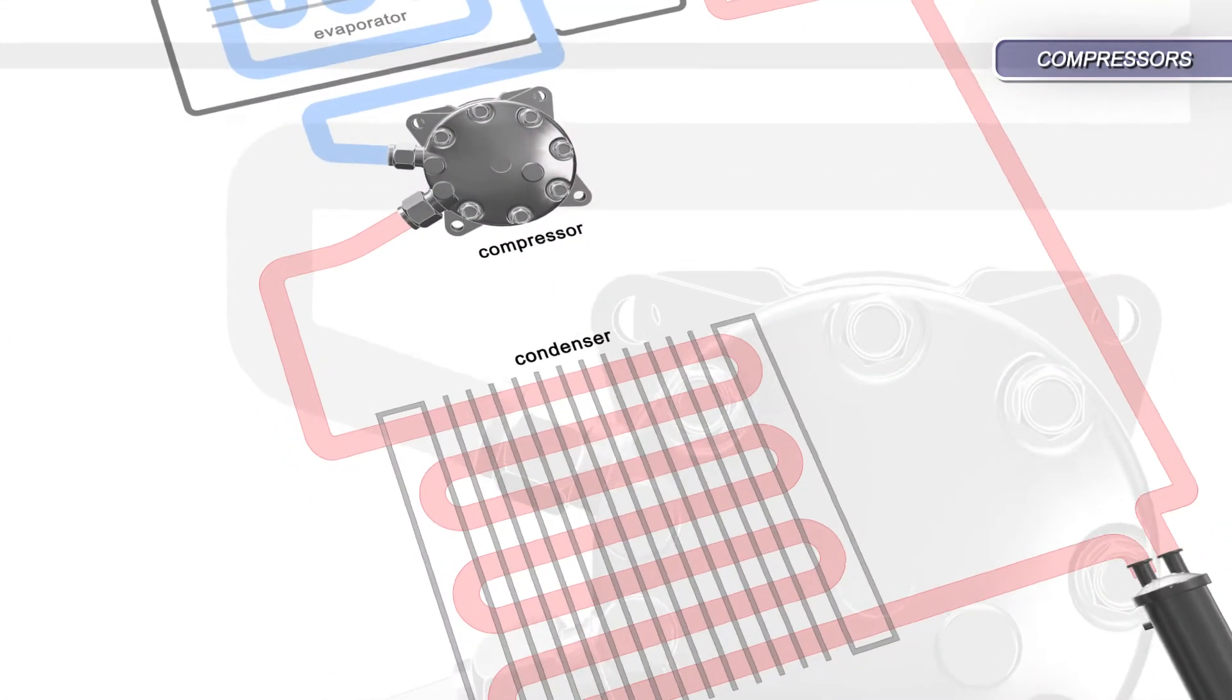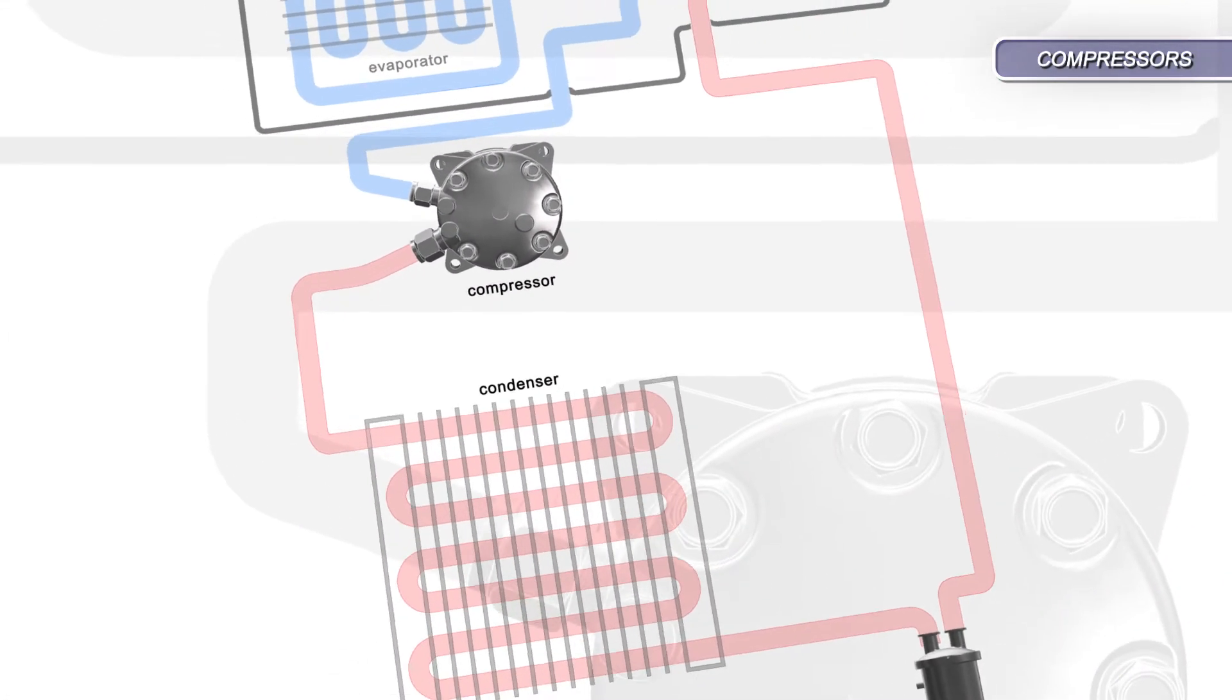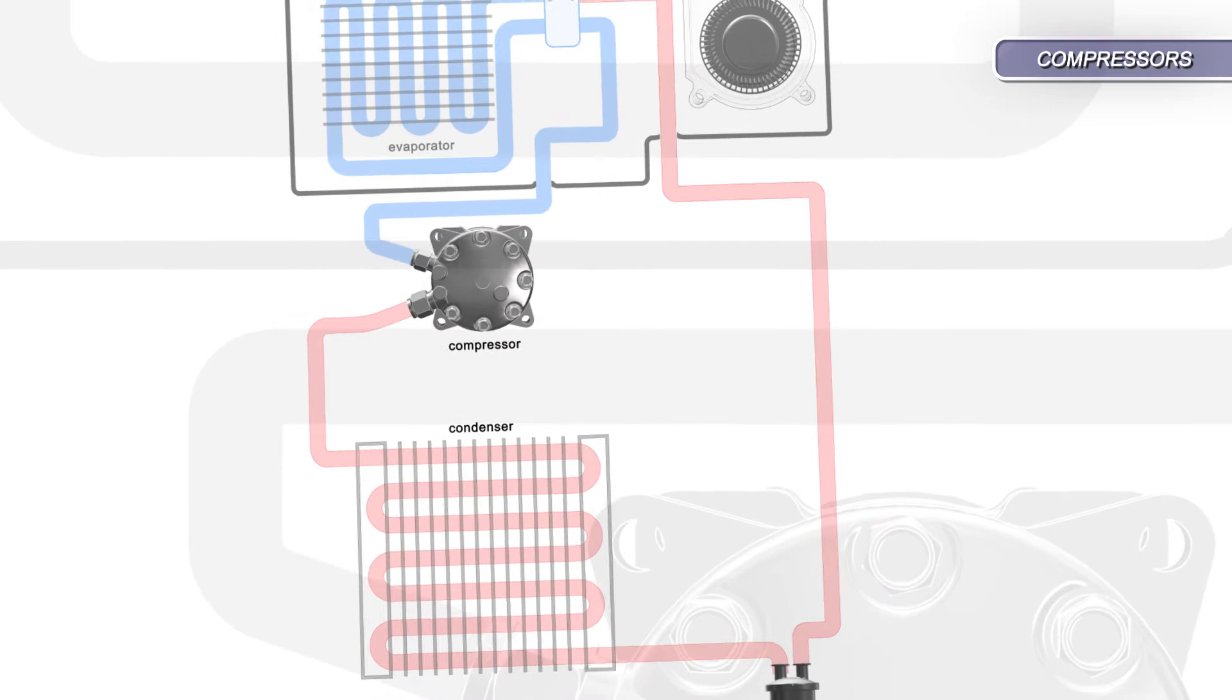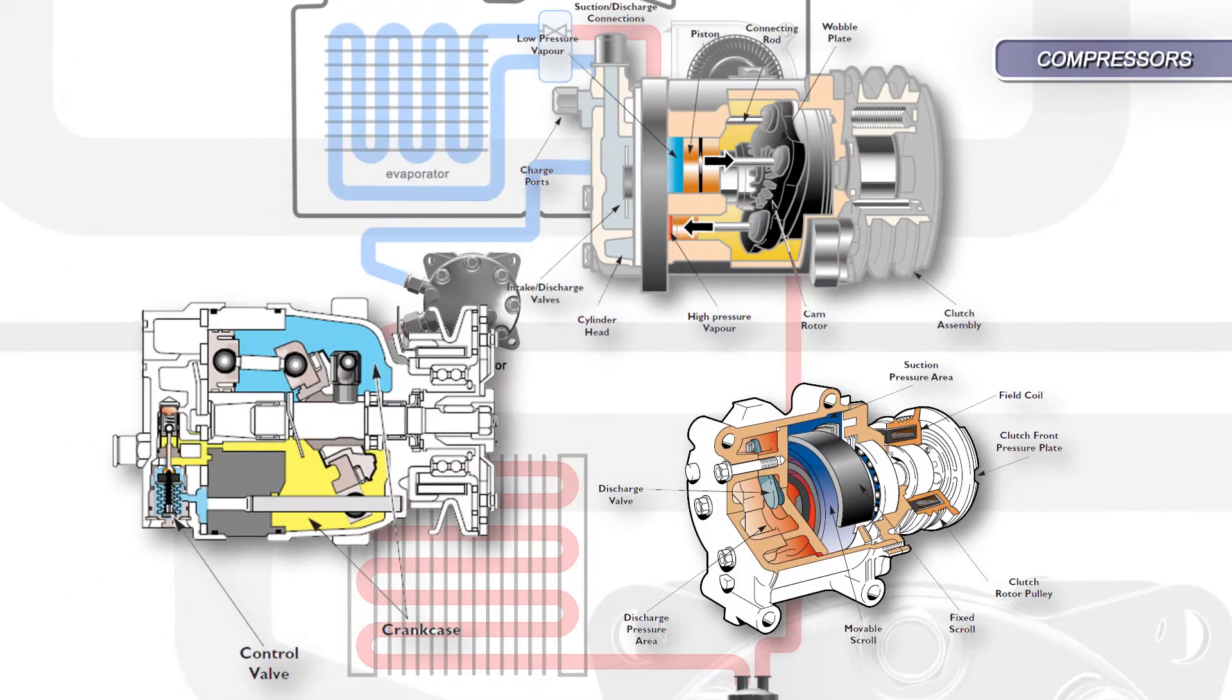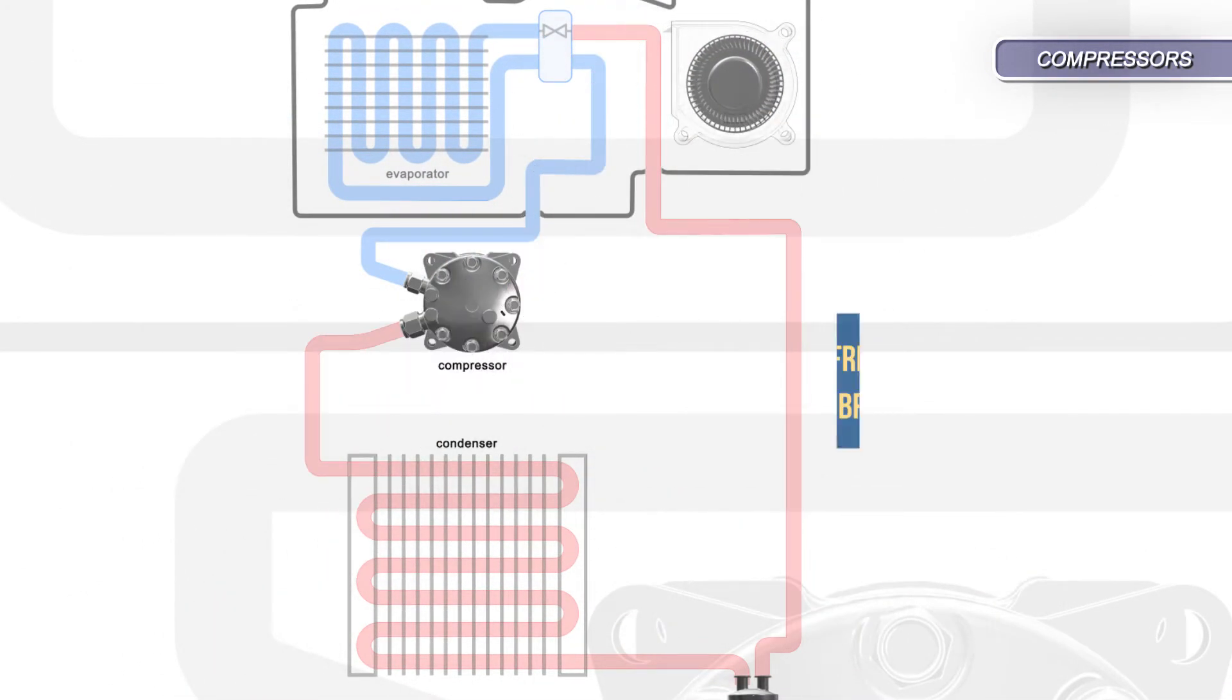There are various makes and types of automotive air conditioning compressors. The internal design could use pistons, scrolls or vanes. Regardless of type, their purpose is to increase the refrigerant pressure and circulate the lubricating oil.